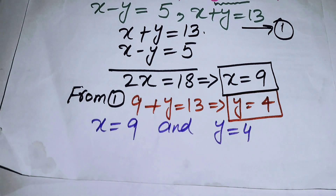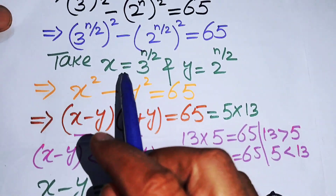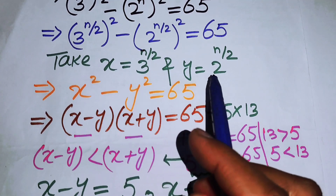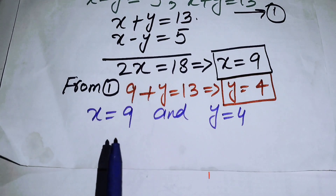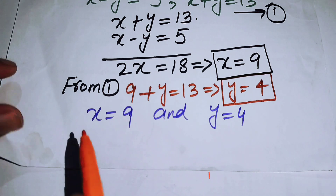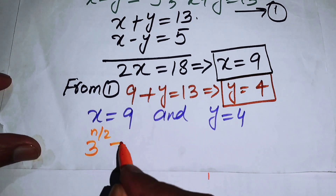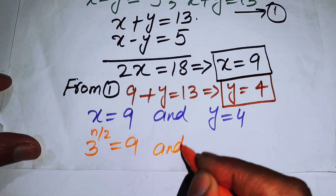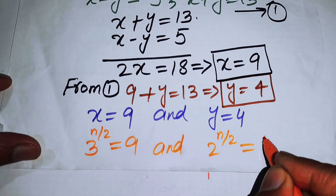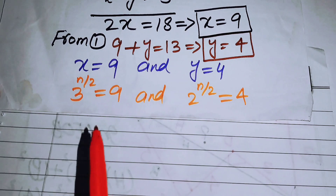We have obtained x equals 9 and y equals 4. Now we move to back substitution. We put x equals 3 to the power of n over 2, and y equals 2 to the power of n over 2, giving us 3 to the power of n over 2 equals 9, and 2 to the power of n over 2 equals 4.